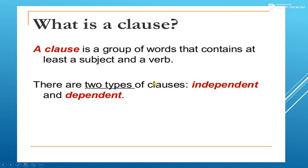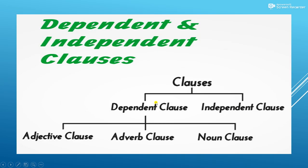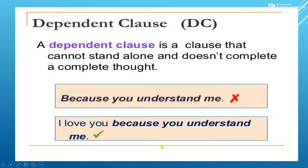There are two types of clauses. They are: independent and dependent clause. A dependent clause is a clause that cannot stand alone and doesn't express a complete thought. So standing alone, it cannot give us meaning — it is like a phrase.